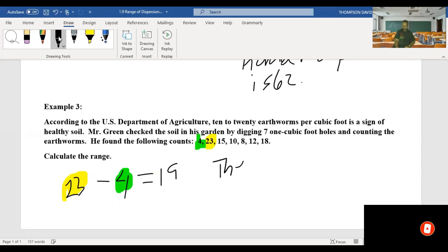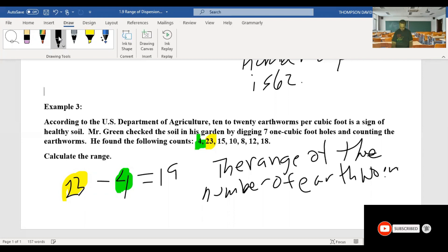So the range of the number of earthworms is 19. And we are done.